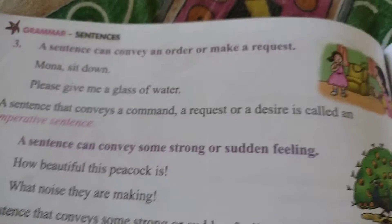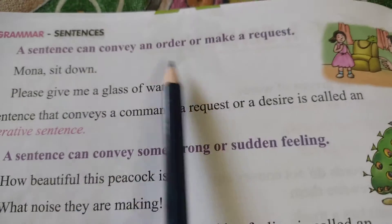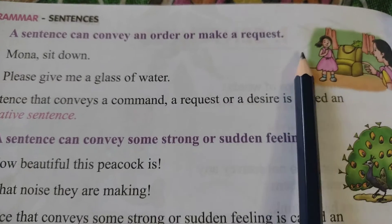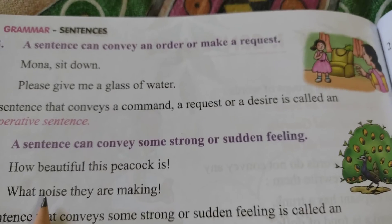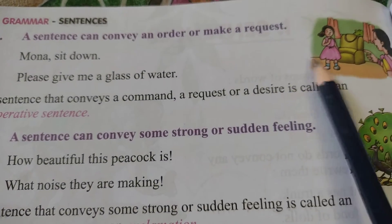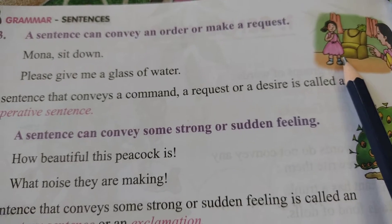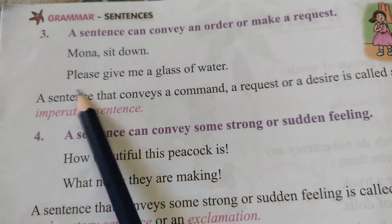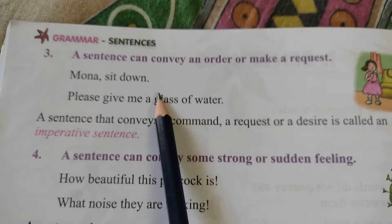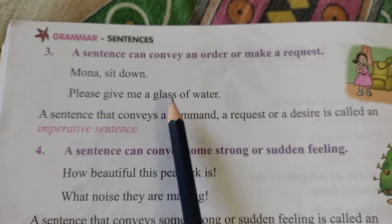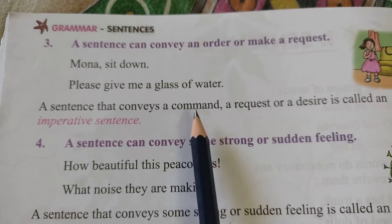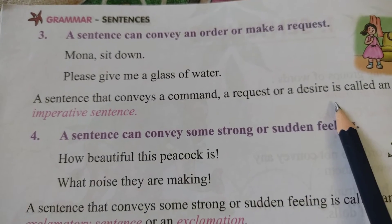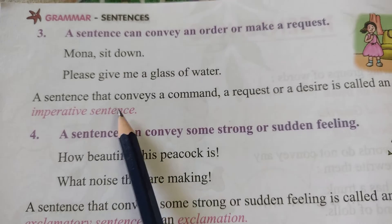Next: a sentence can convey an order, a request, or advice. For example: Mona, sit down. Please give me a glass of water. These are orders, requests, and also advice. A sentence that conveys a command, a request, or a desire is called an imperative sentence.